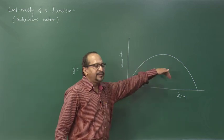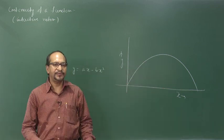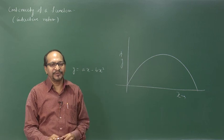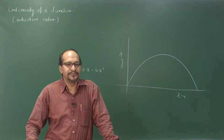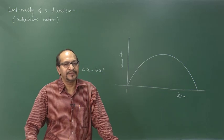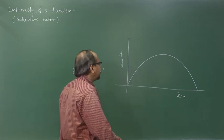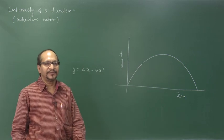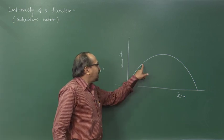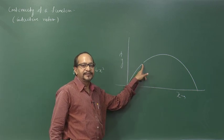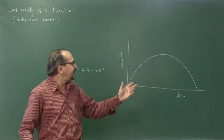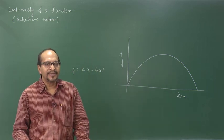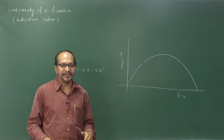You can see this path is a continuous path. We say this function y of x is a continuous function. The trajectory of a projectile gives a continuous function of its vertical coordinate with respect to its horizontal coordinate. Suppose we make a break in the graph — that would mean the particle vanishes and reappears, which is physically not possible. This is why the trajectory is a continuous function.